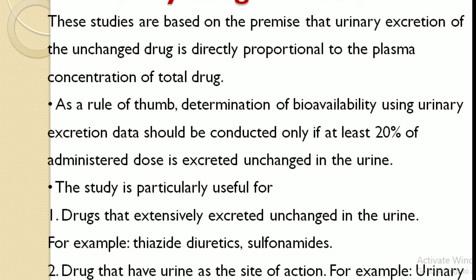The next method is urinary drug excretion. These studies are based on the premise that urinary excretion of the unchanged drug is directly proportional to the plasma concentration of the total drug. As a rule, determination of bioavailability using urinary excretion should be conducted only if at least 20% of the administered drug is excreted unchanged in the urine. The method is particularly useful for drugs extensively excreted unchanged in the urine or drugs that have the urine as the site of action.